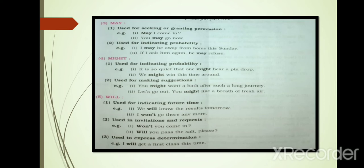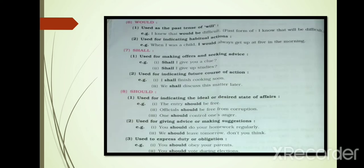Example: Won't you come in? Will you pass the salt, please? Will also used to express determination. Example: I will get a first class this time. Next modal auxiliary: Would. Would is used as the past tense of will. Example: I knew that would be difficult.